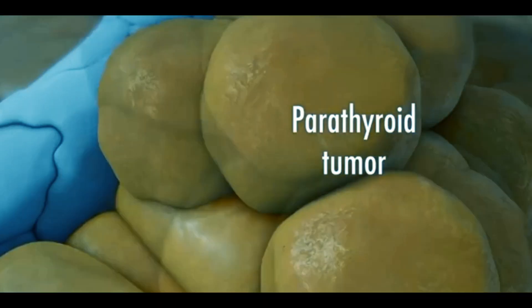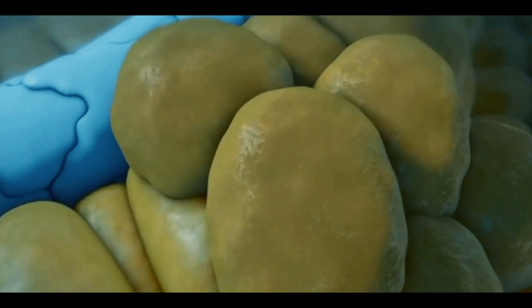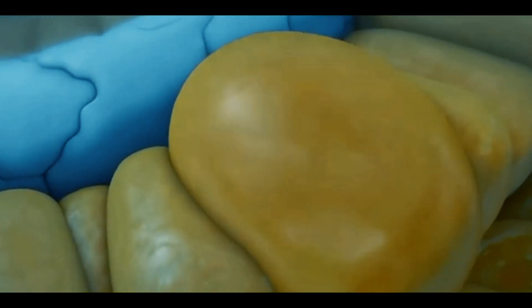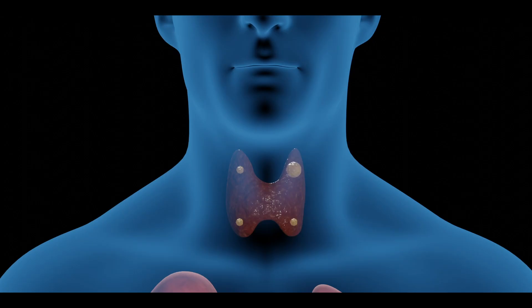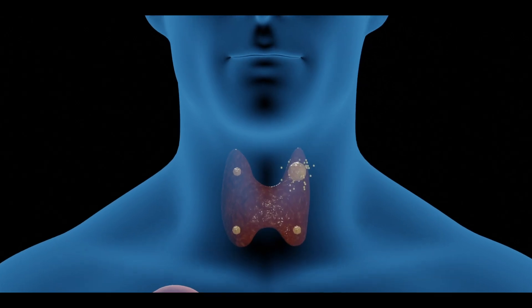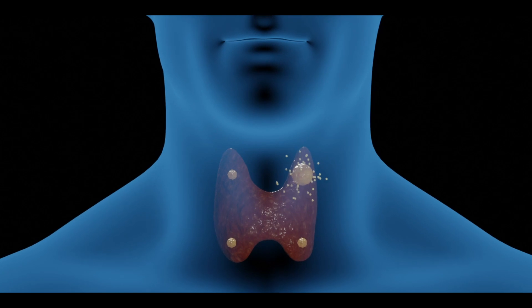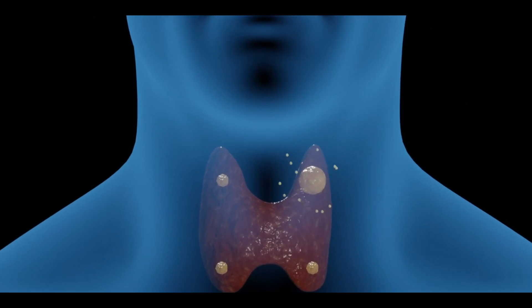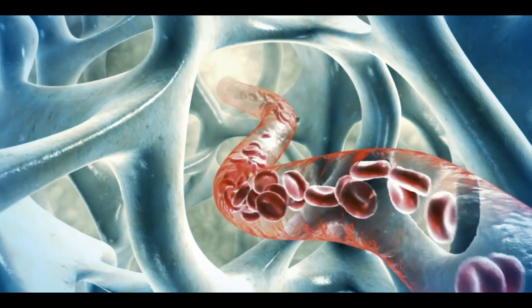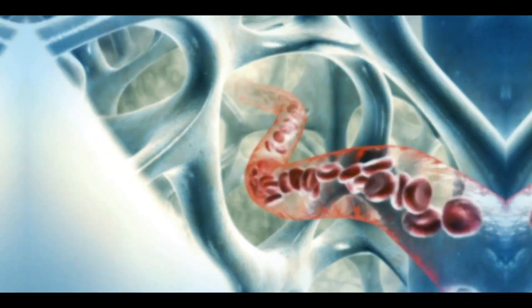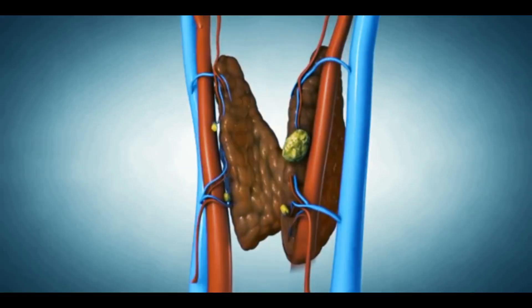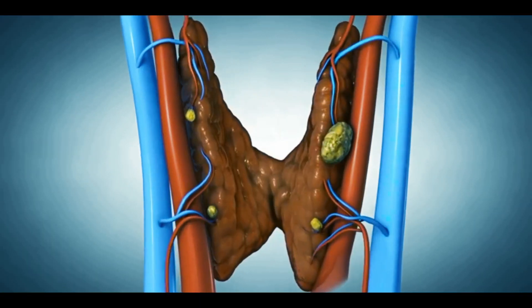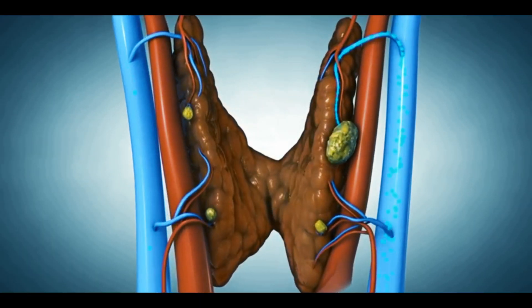Besides, sometimes tumor growth occurs in parathyroid glands. As a result, parathyroid glands become enlarged and overproduce parathyroid hormone even when blood calcium level is normal. This also results in development of hyperparathyroidism.